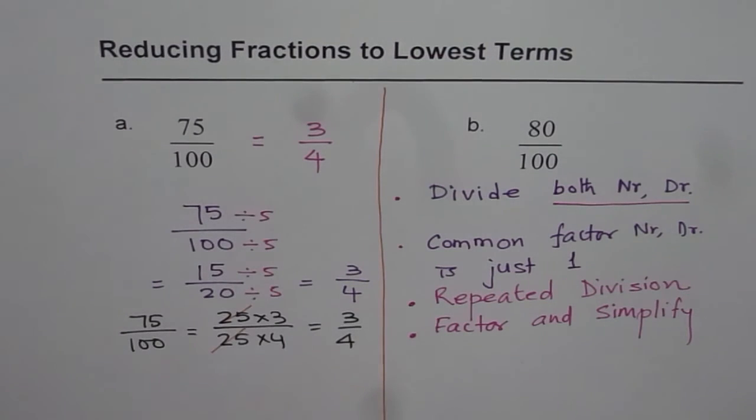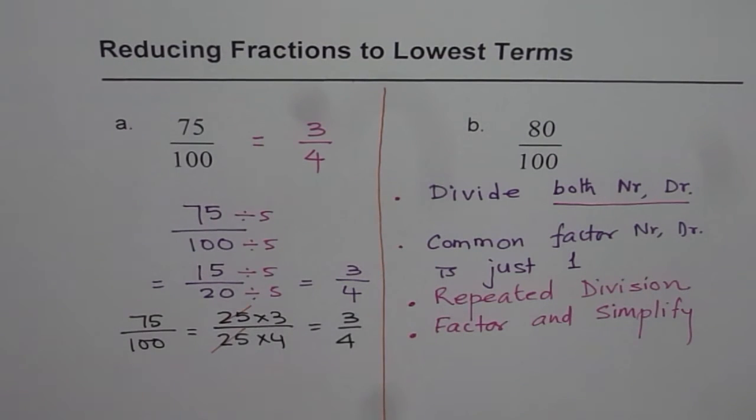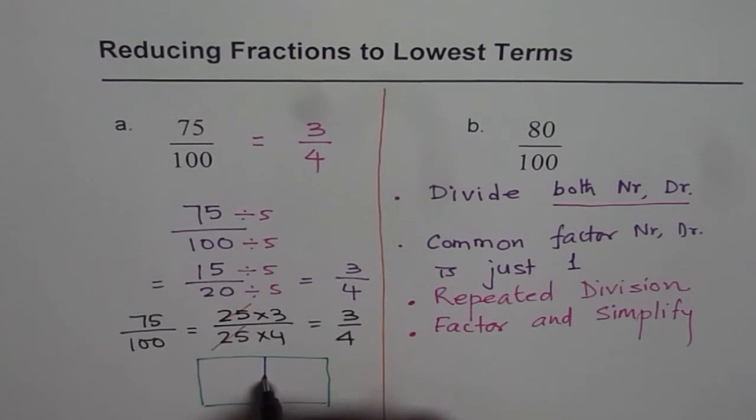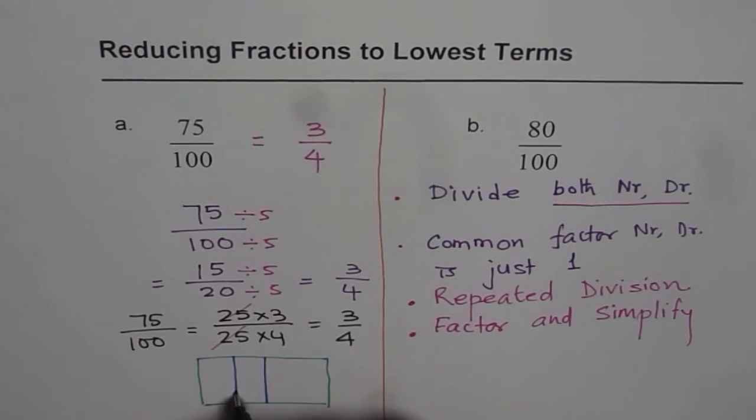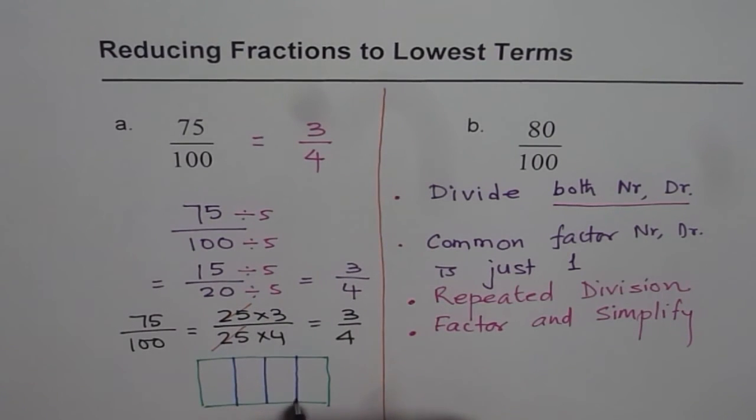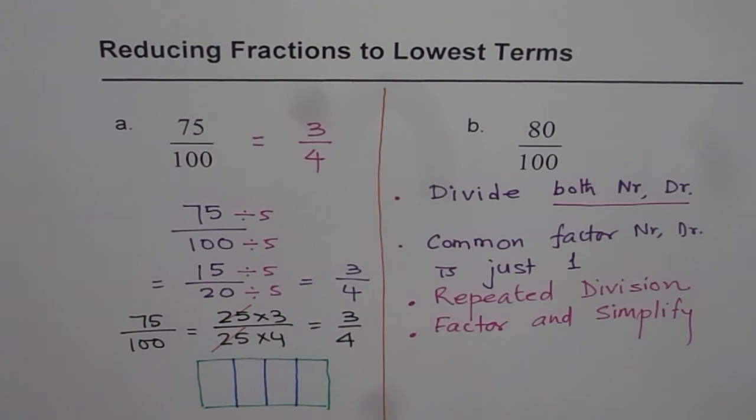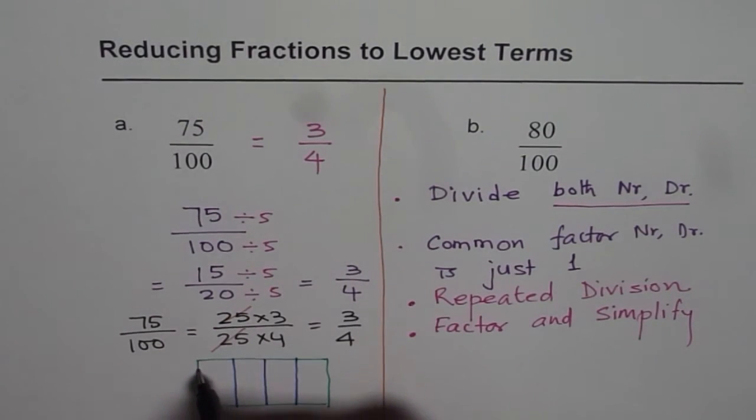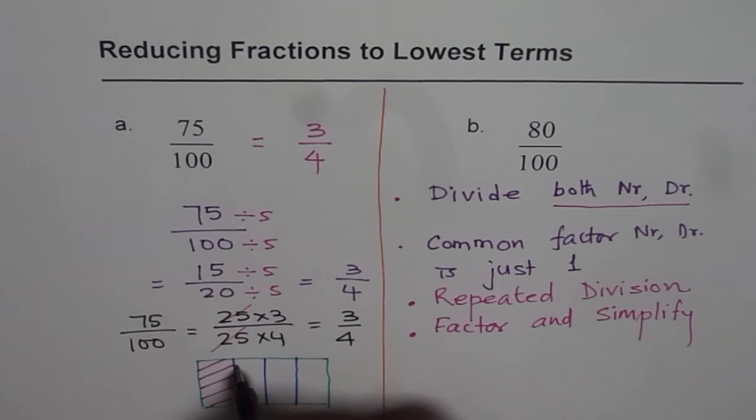Now, meaning you understand 3 out of 4 really means what? It really means that if we have some rectangle and if I divide this rectangle into 4 equal parts, then 75 over 100 is equal to 3 out of 4. So, that means we take away 3 parts. That is what it means.